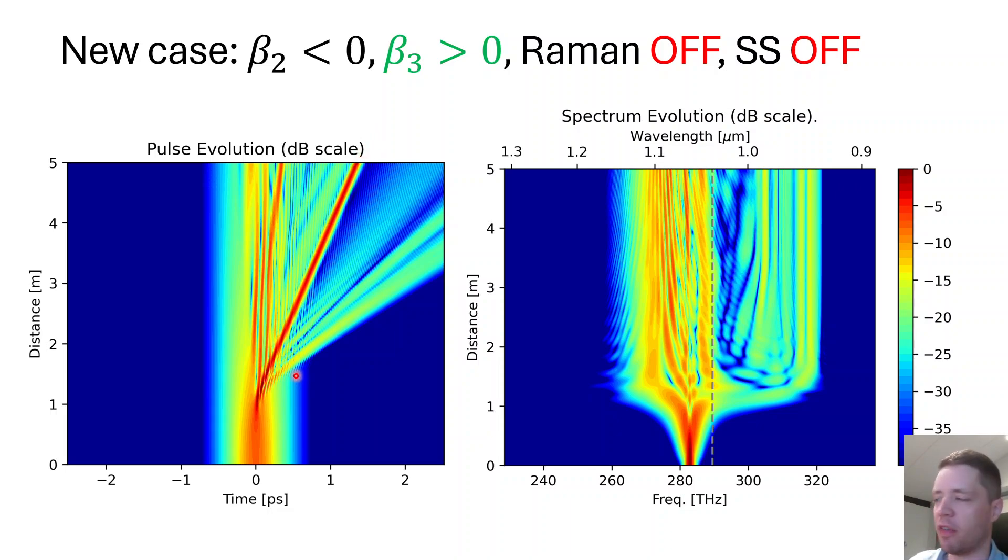So how can we understand that this is happening? Well, when you have a big power spike right here, essentially the nonlinearity is going to cause a red chirp in the front and a blue chirp in the back. Beta-3 being positive means that both red light and blue light will propagate more slowly than the carrier frequency. So this very blue shifted and red shifted pulse will begin to lag behind the main one and drift further and further behind as we can see here.